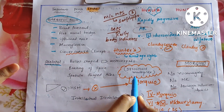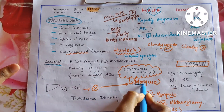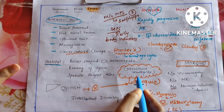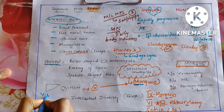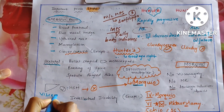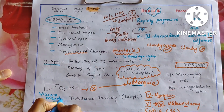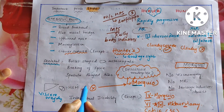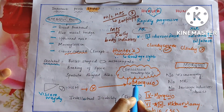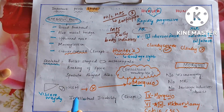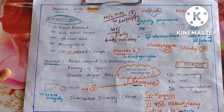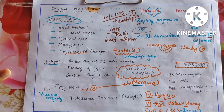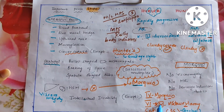Dysostosis multiplex is more prominent with Morquio. Coming to visceromegaly: hepatosplenomegaly is seen in all MPS except Morquio — Morquio does not have visceromegaly. Coming to intellectual disability: all MPS present with intellectual disability except for three diseases — four, four-reversed (six), and Scheie's.